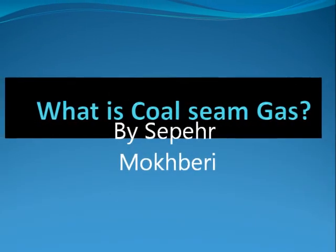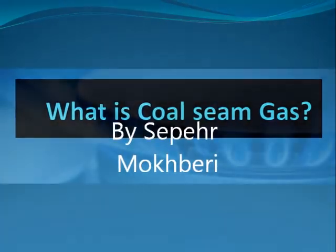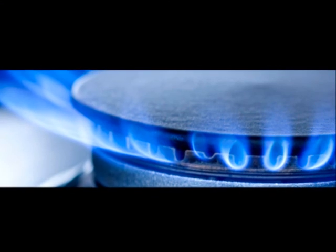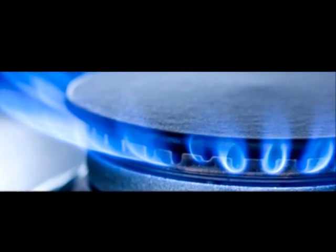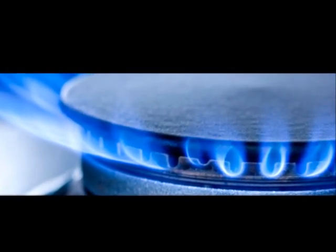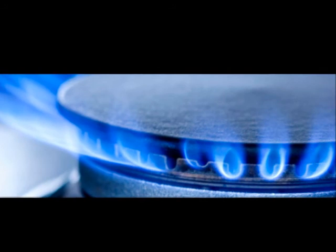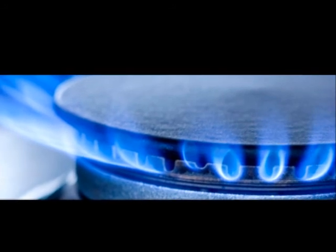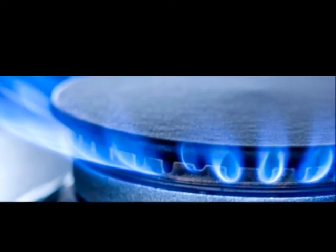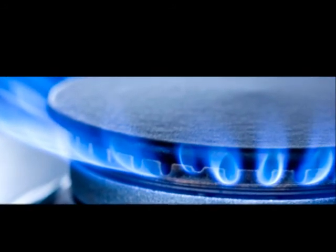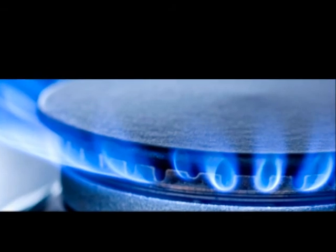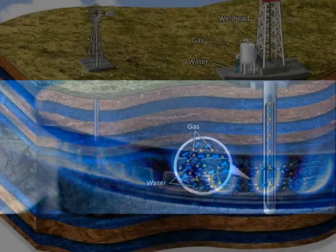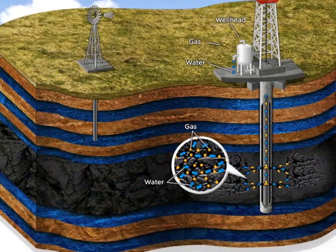What is Coal Seam Gas? Coal Seam Gas is a type of natural gas which is composed primarily of methane and contains trace amounts of butane and propane. Unlike natural gas, which is located in the space between grain and sandstone, coal seam gas is bounded to the surface of coal particles.